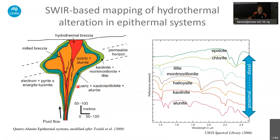All of these alteration minerals — apart from quartz in this case — can be mapped using simply the shortwave infrared part of the spectrum. We have spectral signatures for alunite, kaolinite, and so forth, moving from proximal to distal to the ore deposit. If you want to add quartz, then you need a thermal infrared system and that part of the spectrum too.